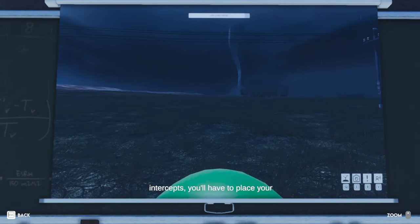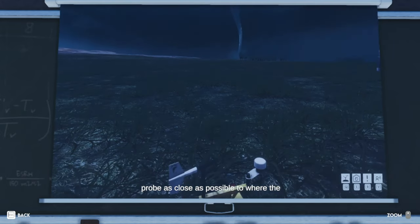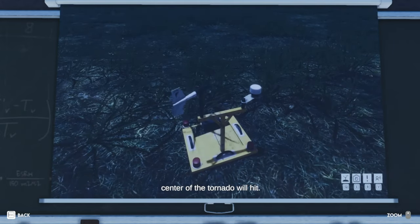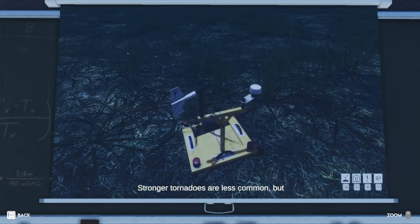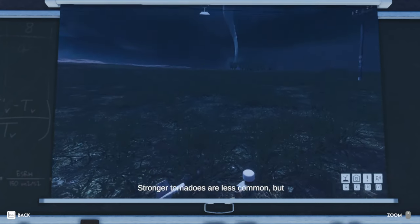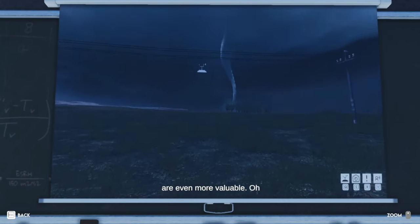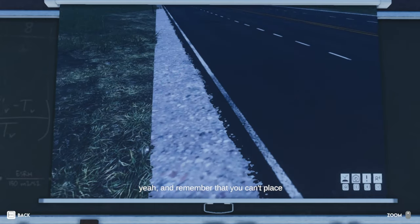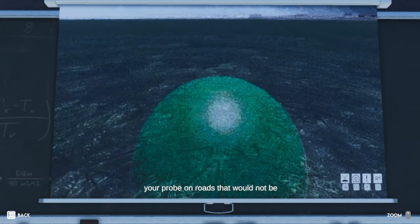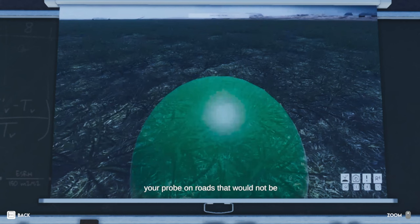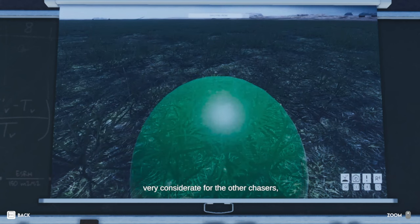To get the best out of your probe intercepts, you'll have to place your probe as close as possible to where the center of the tornado will hit. Stronger tornadoes are less common, but are even more valuable. Oh yeah, and remember that you can't place your probe on roads. That would not be very considerate for the other chasers, would it?